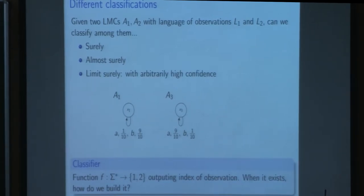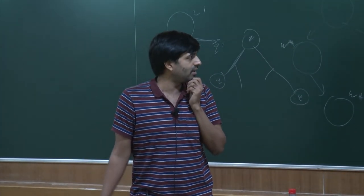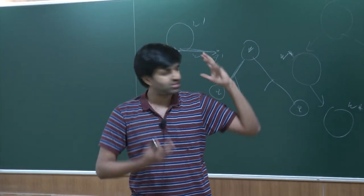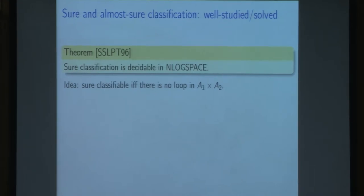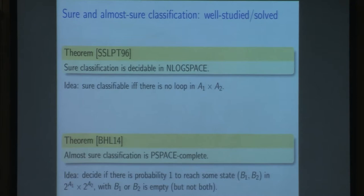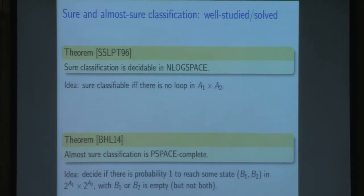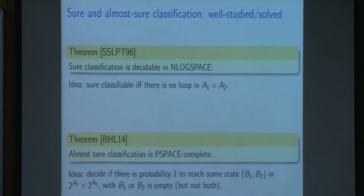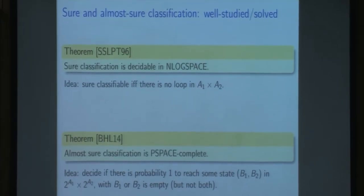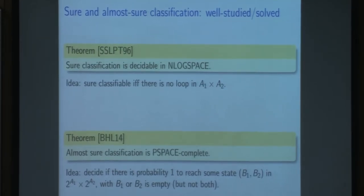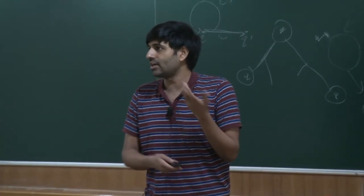So it turns out that this problem actually unsurprisingly has received a lot of attention. And if you look at the sure classification problem, it was solved long, long ago, where it was shown to be in NL space. Essentially the idea is you just take a product of A1 and A2, where you take the product with respect to the actions and you check whether there is a loop which comes. Similarly, this problem of almost sure classification is more recent, but it has been again looked at in the language of diagnosis. For those of you who know, again I will not go into the details, but there is an easy enough proof which shows that this is PSPACE complete. So the goal of this paper was to look at this in between notion, this other notion of limit sure classification and try to come up with algorithms for it and try to come up with characterizations for it.